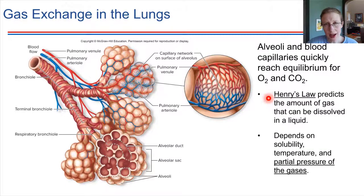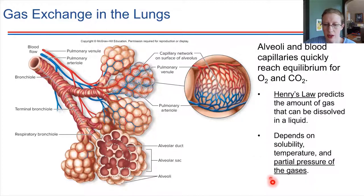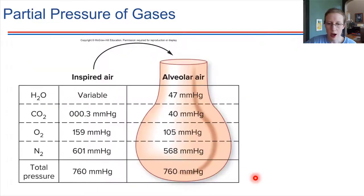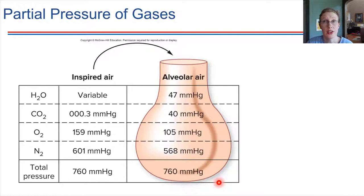We can predict how much gas will go into the blood based on a couple of things. We need to know the solubility of the gas, the temperature of the blood and of the air, and — we're going to focus on this one — the partial pressure of the gases. The partial pressure depends on how many gases are present and quantifies the ratios of those gases. So let's do a comparison.